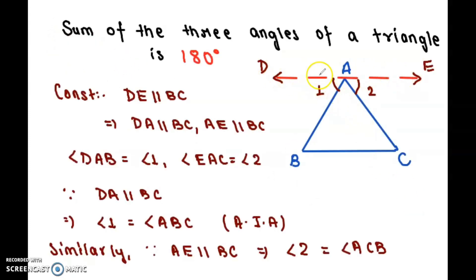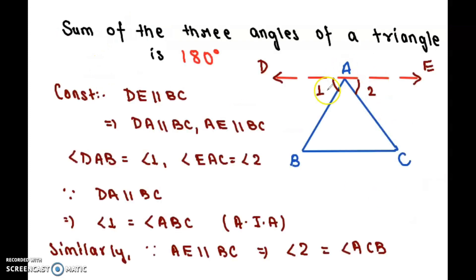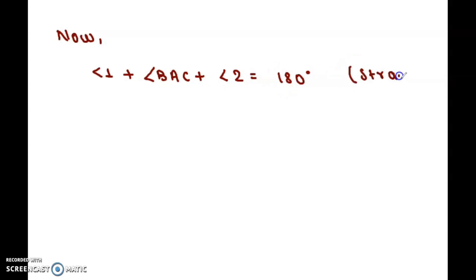Since DAE forms a straight line, using the straight line property, the angles lying on that line must sum to 180 degrees. Therefore, angle 1 plus angle BAC plus angle 2 is equal to 180 degrees.